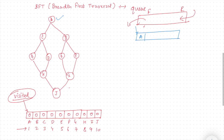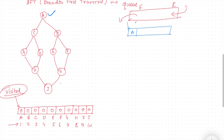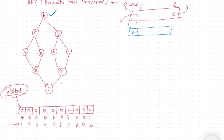Say we are starting traversal from node A. First we go to the visited array and see whether A has been visited or not. Since we find the value as zero, we change it to one, marking A as visited. Now the adjacent nodes of A are C and B.